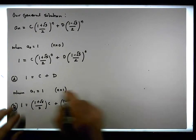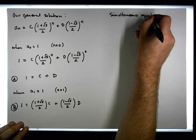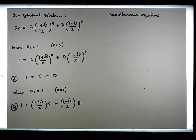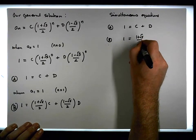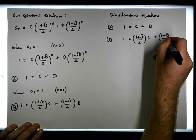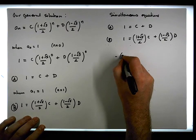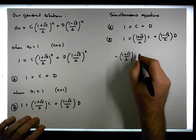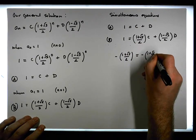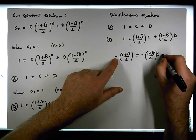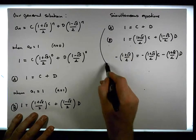We now have simultaneous equations in two unknowns. Equation a: 1 = c + d. Equation b: 1 = (1 + √5)/2 · c + (1 - √5)/2 · d. To eliminate c, we multiply equation a by the negation of c's coefficient, which is -(1 + √5)/2, giving us -(1 + √5)/2 = -(1 + √5)/2 · c - (1 + √5)/2 · d.